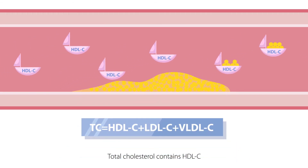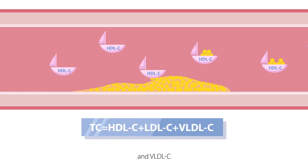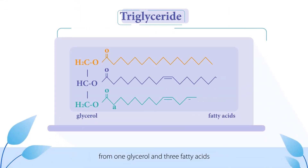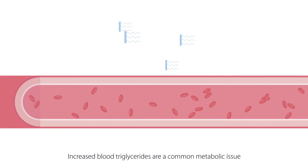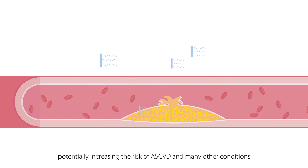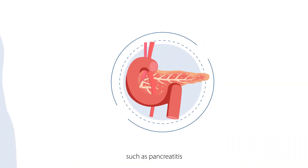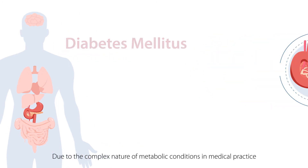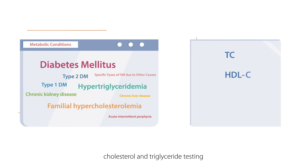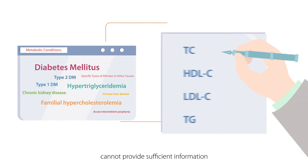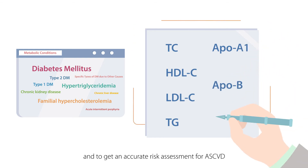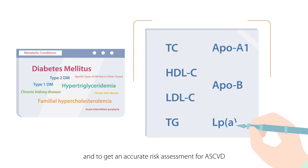Total cholesterol contains HDL-C, LDL-C, and VLDL-C. A triglyceride is an ester derived from 1-glycerol and 3-fatty acids. Increased blood triglycerides are a common metabolic issue, potentially increasing the risk of ASCVD and many other conditions such as pancreatitis. Due to the complex nature of metabolic conditions in medical practice, cholesterol and triglyceride testing cannot provide sufficient information. Novel lipid parameters are crucial to obtain the whole picture of lipid metabolism and to get an accurate risk assessment for ASCVD.